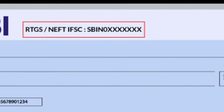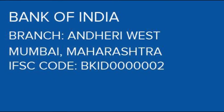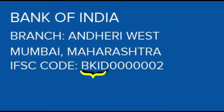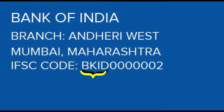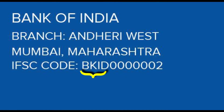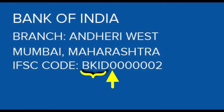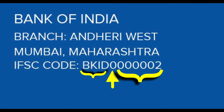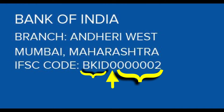And the last 6 digits represent the branch code. For example, we can take the first 4 digits — this is the Bank of India — which identifies the branch. The 5th digit is 0, and the remaining 6 digits give us the Bank of India branch code.